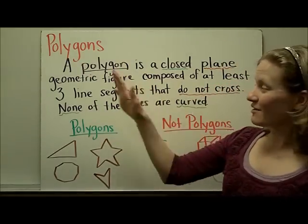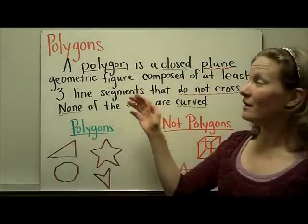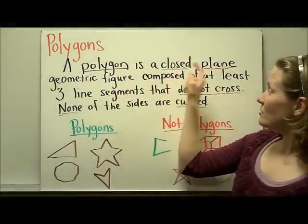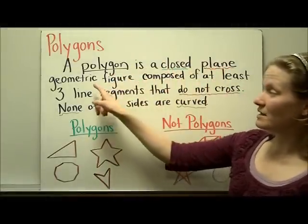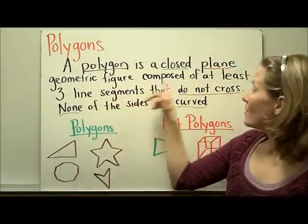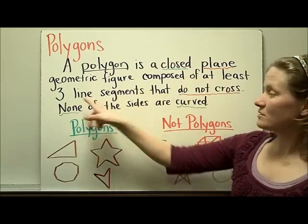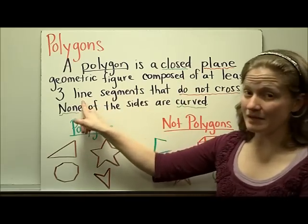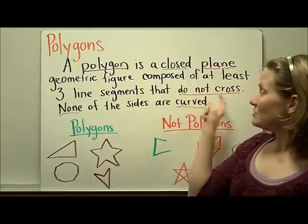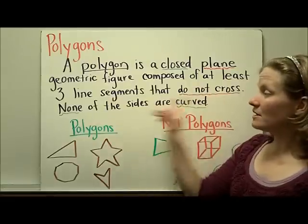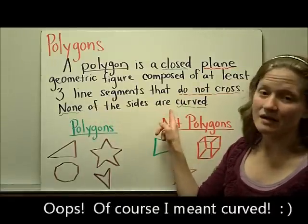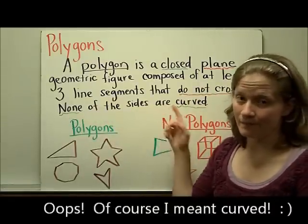Polygons. Here's the definition of a polygon. A polygon is a closed, plain geometric figure composed of at least three line segments that do not cross. Also, none of the sides are curved.